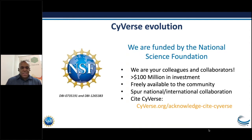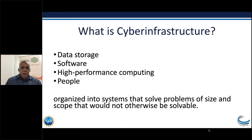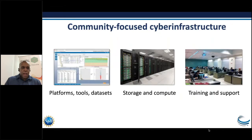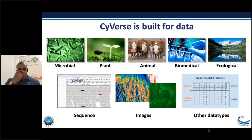We really try to create a space where science can be done with as few restrictions as possible — we do ask that people cite when they use it. The term cyber infrastructure may or may not be familiar, but the components certainly are: data storage, software, high performance computing, and especially people. Because you have access to all of those set up in the right way, you can solve challenges that otherwise you wouldn't be able to tackle. Practically speaking, that means access to platforms, tools, data sets, storage, compute, as well as training and support. CyVerse is really built for data — no matter the data type, you have many ways to leverage the platform to accomplish science.